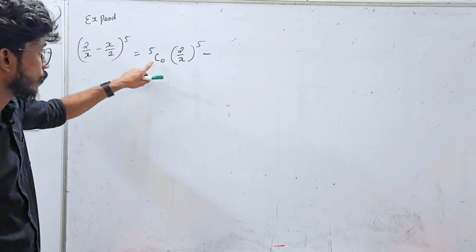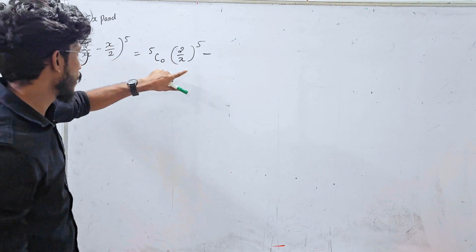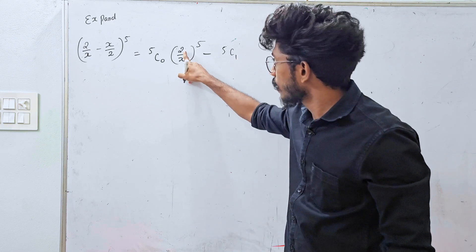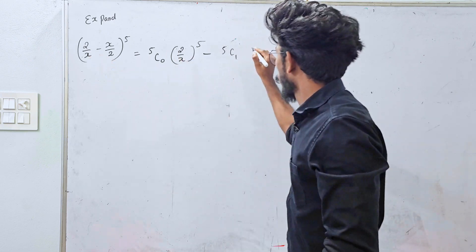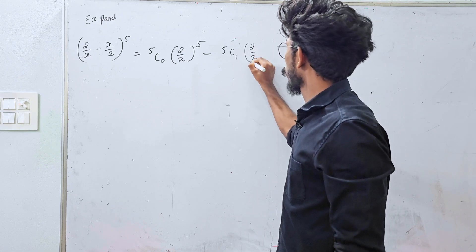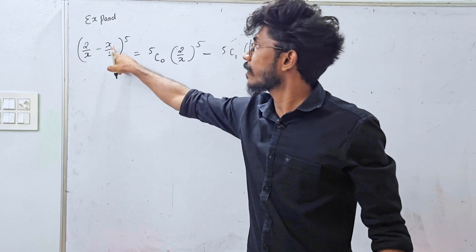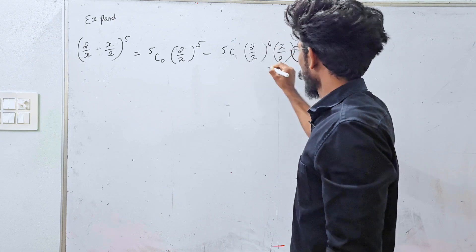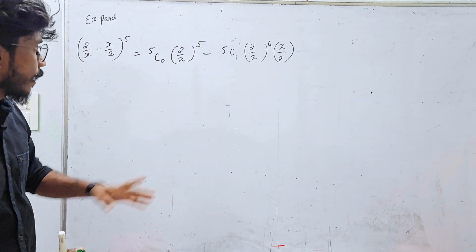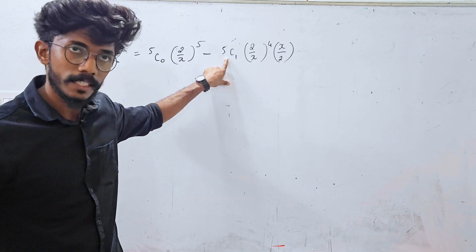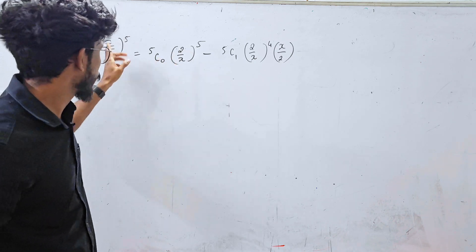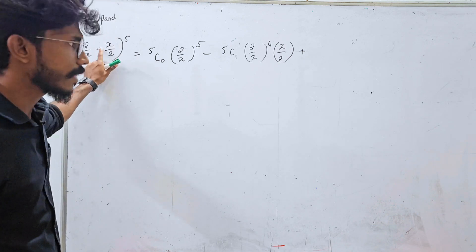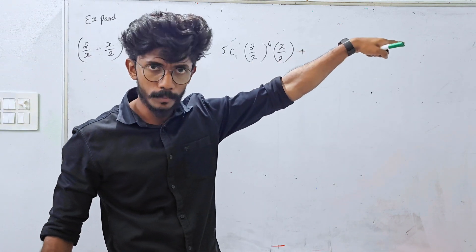5C0 term: the full power. Then 5C1: 2 by x raised to 4, times x by 2. Then 5C2: 2 by x raised to 3. If you have a negative sign, the alternative terms are negative and positive. Then 5C2, 2 by x raised to 1 times positive.